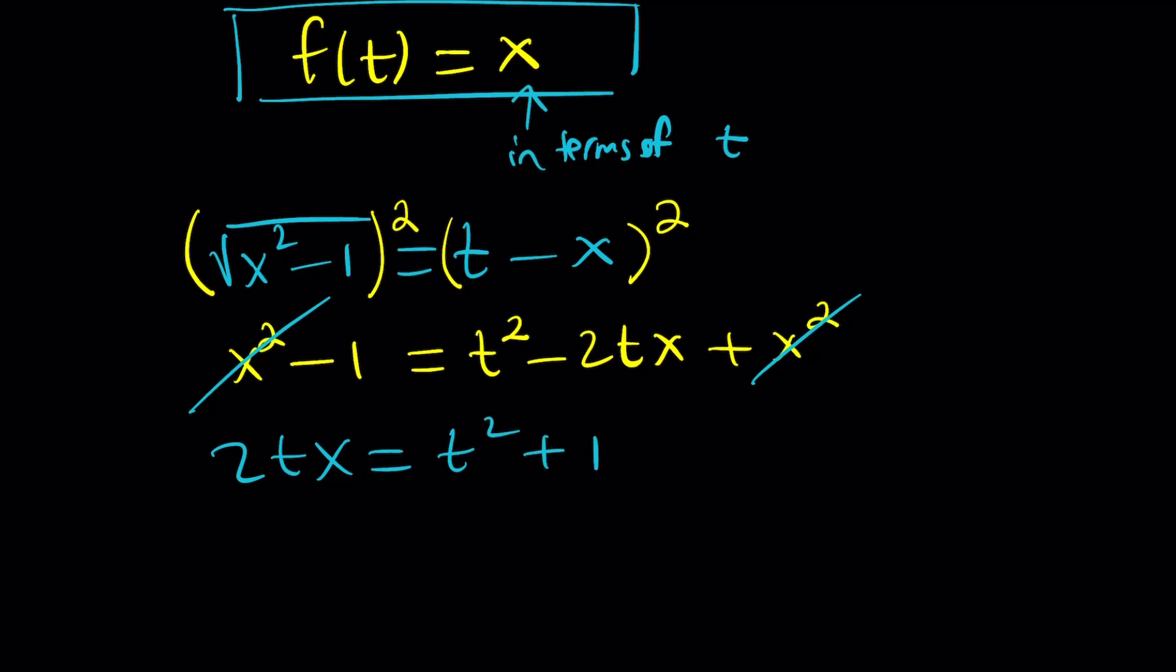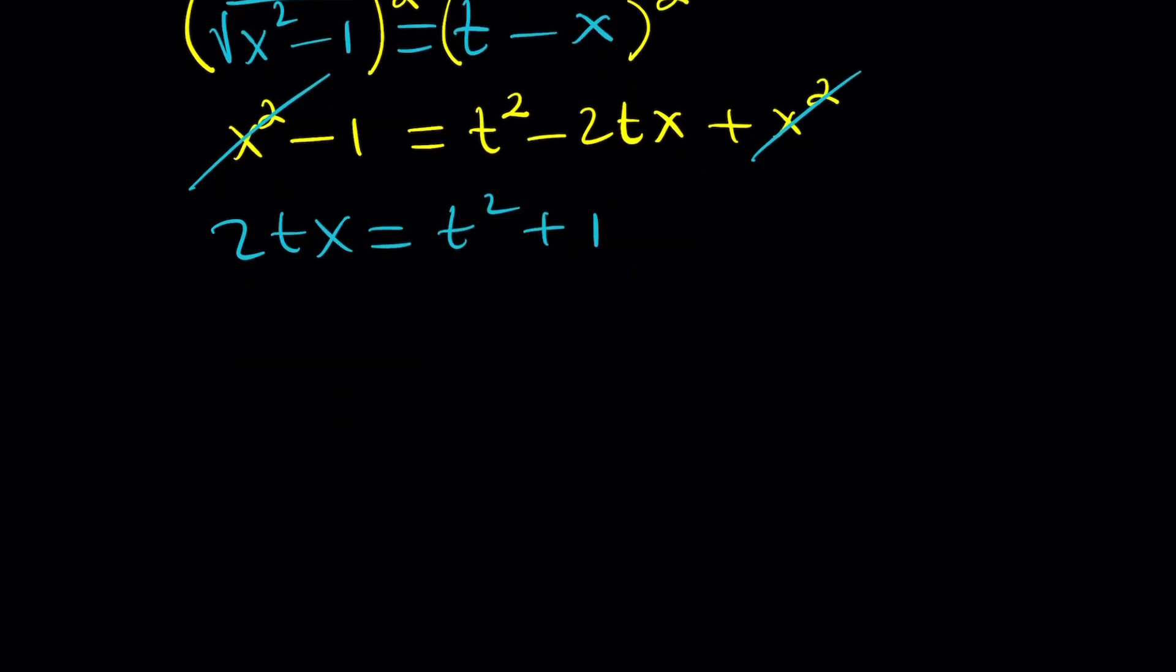In other words, add 1 and add 2tx. Now, we want to solve for x. So let's go ahead and divide both sides by 2t. That's the problem, right? And we get the value of x.